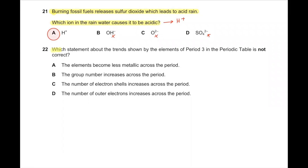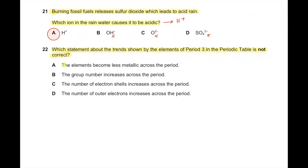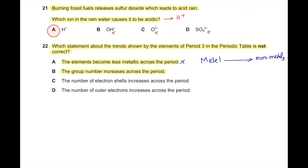Question number 22. Which statement about the trends shown by the elements of period 3 in the periodic table is not correct? Option A: the elements become less metallic across the period — this is correct, as the left-hand side has metals and moving right gives non-metals. Option B: group number increases across the period — yes, this is also correct, so it will not be the answer.